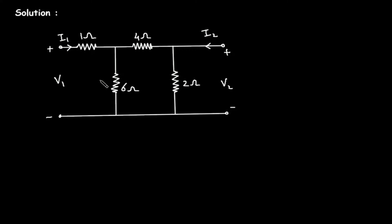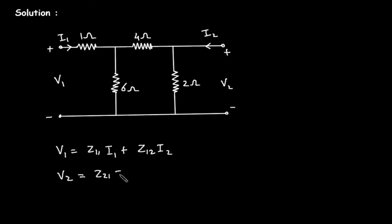So we have to find Z parameters. First we will write the expression for Z parameters. The expression is: V1 = Z11·I1 + Z12·I2, and V2 = Z21·I1 + Z22·I2. In the case of Z parameters, V1 and V2 are dependent, and I1 and I2 are independent. V1 and V2 depend on I1 and I2, and the coefficients Z11, Z12, Z21, and Z22 are the Z parameters.